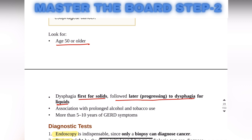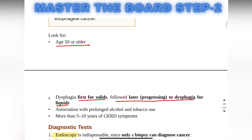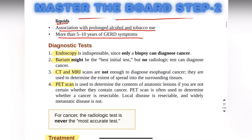As we have read in achalasia, the dysphagia for solids and liquids occurs at the same time, but in esophageal cancer the dysphagia is first for solids and then for liquids. It has an association with prolonged alcohol and tobacco use, and more than five to ten years of GERD symptoms — the patient will have symptoms of gastroesophageal reflux disease for more than five to ten years.